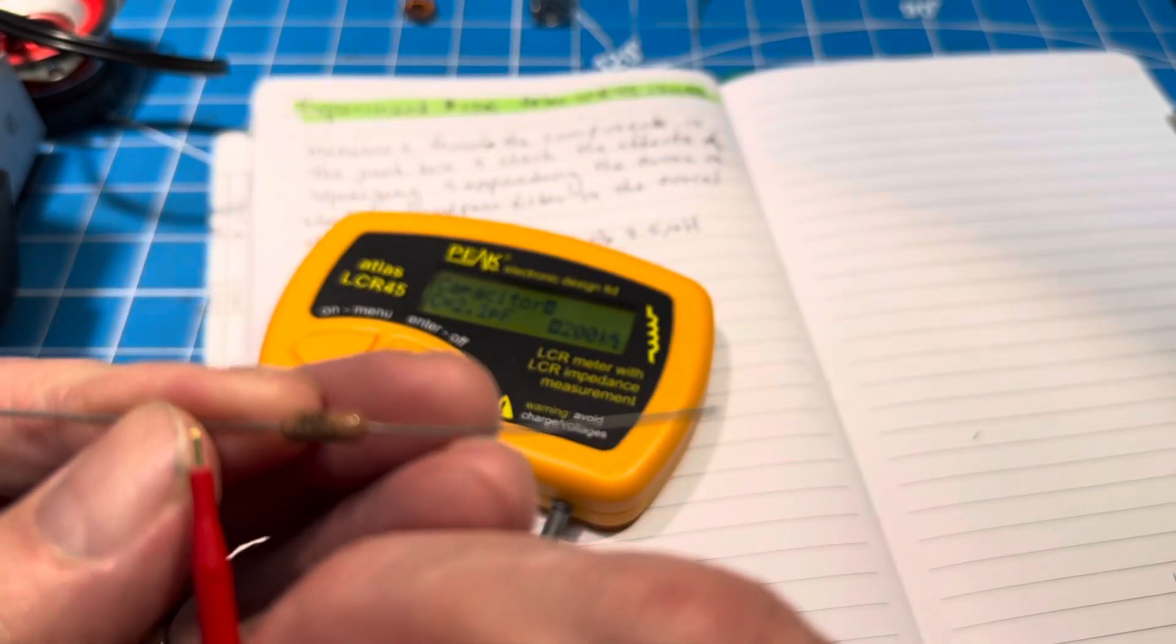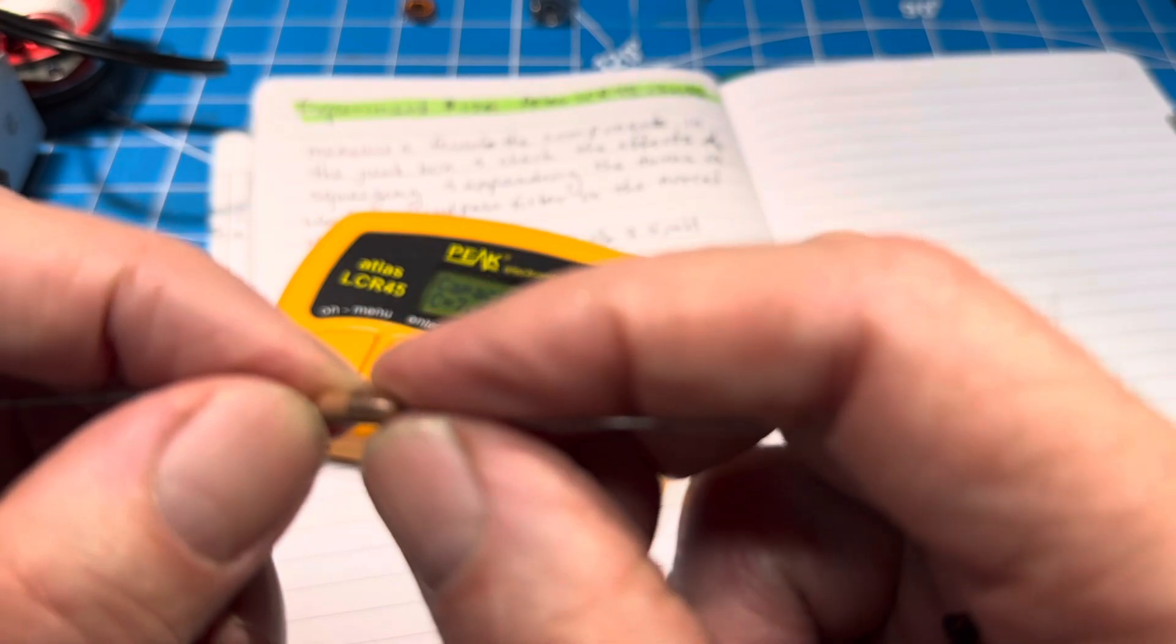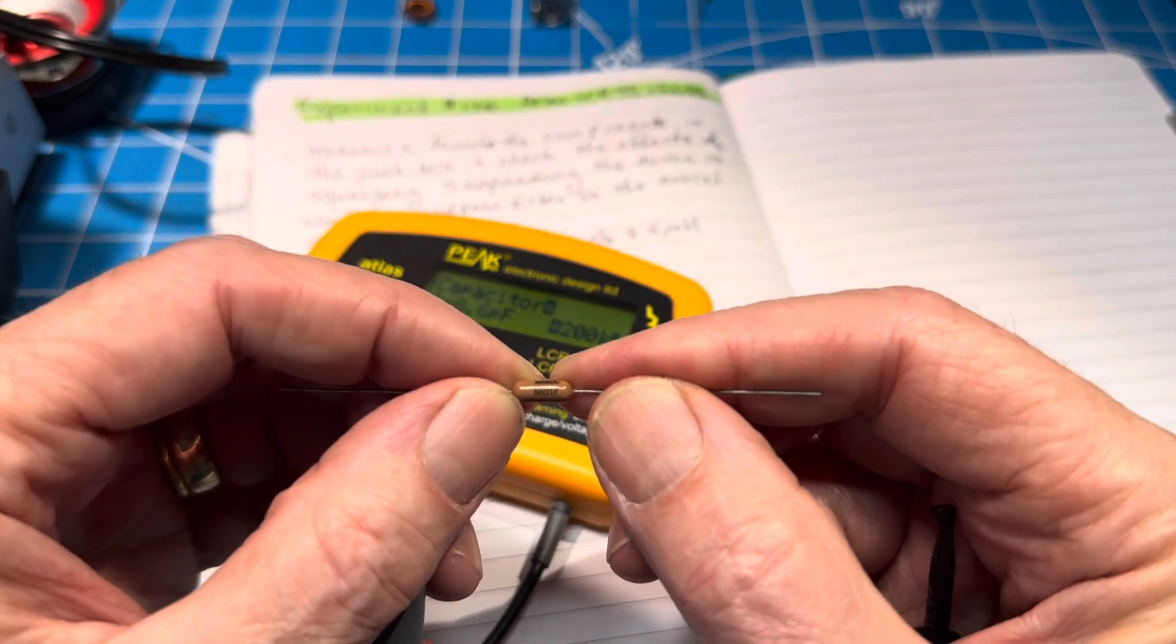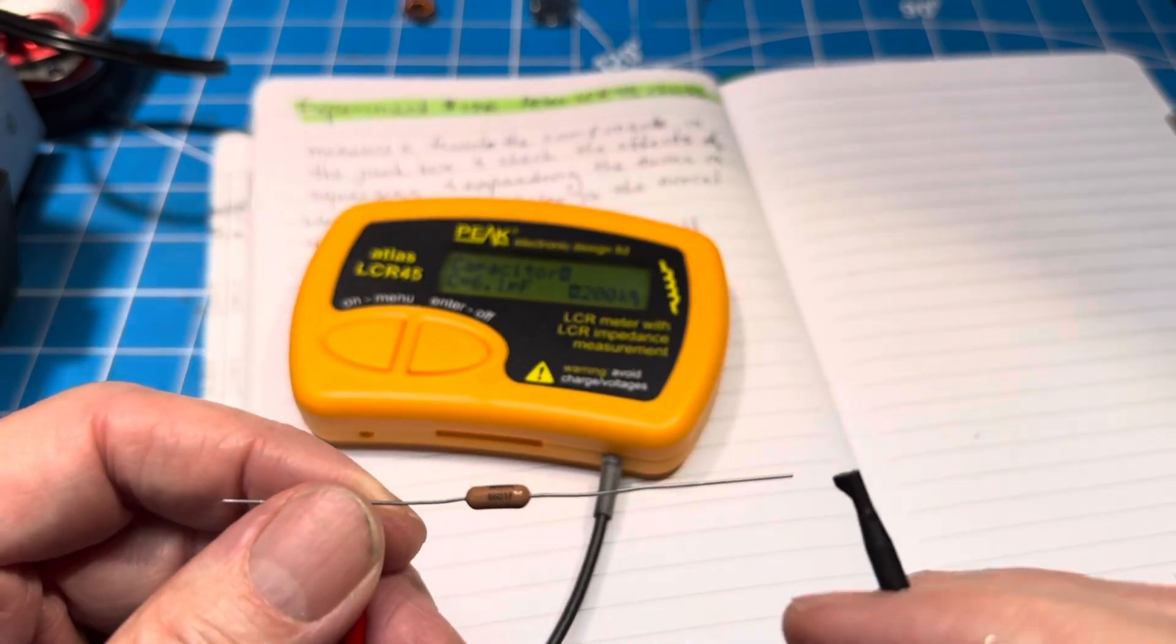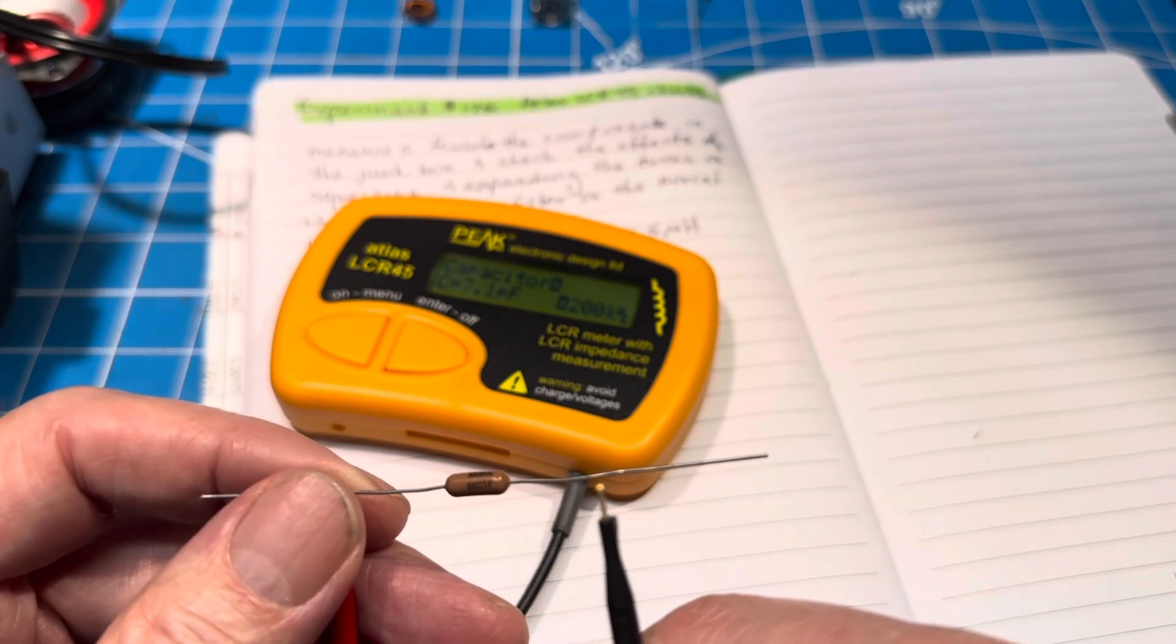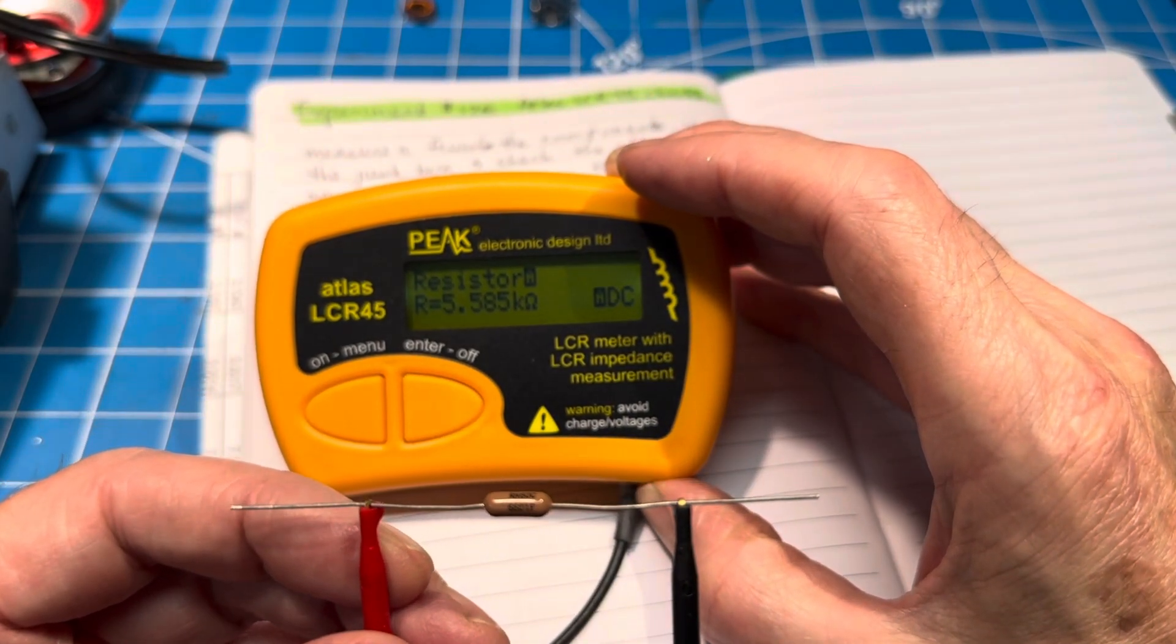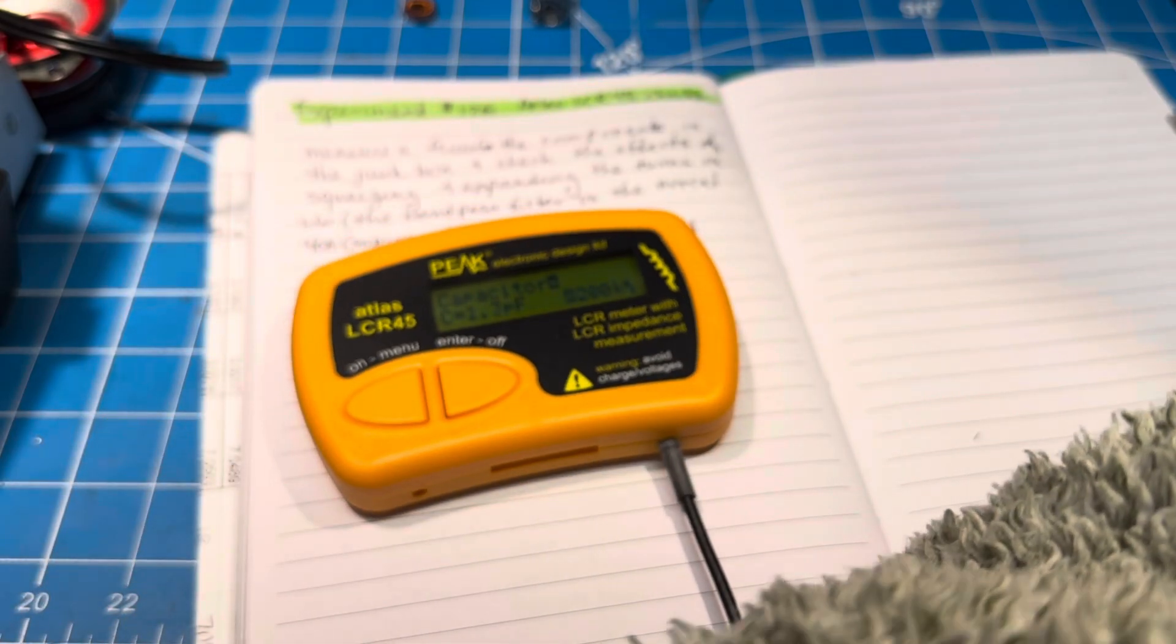And then I've got another one for you. This one gives you a whole lot more choices. So this is a Dale part, that might give it away for some. And then it says 8813 and then RN60C and then 5601F. So what do you think it is and what's the value? If I was going to take a guess, it would be something like green blue black brown. And there you are, so it's supposed to be 5.6k.